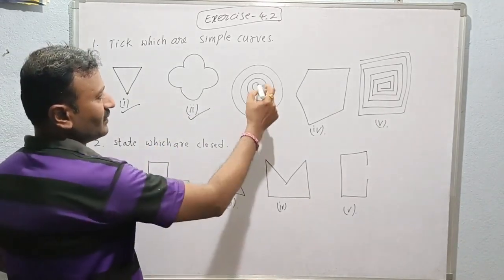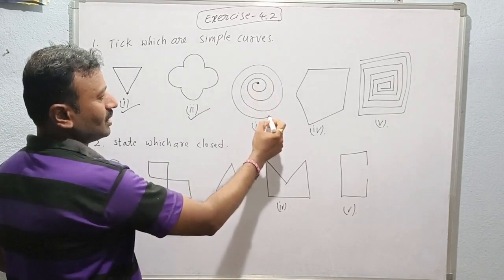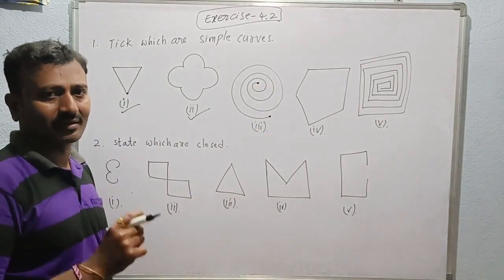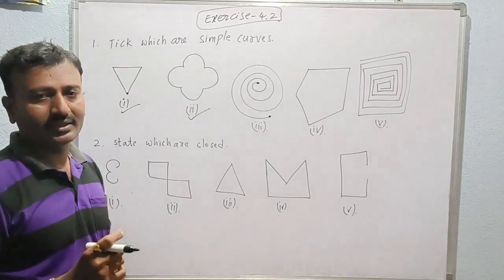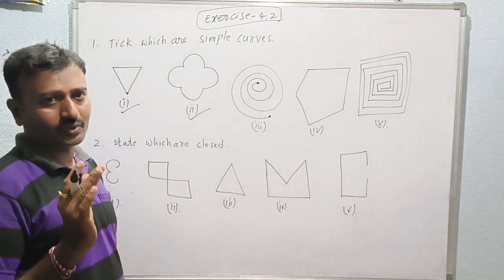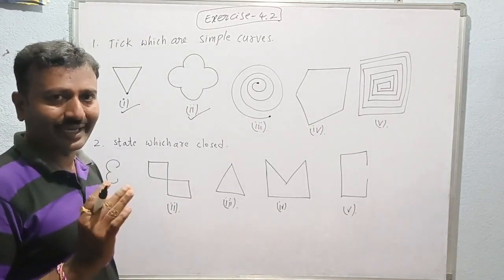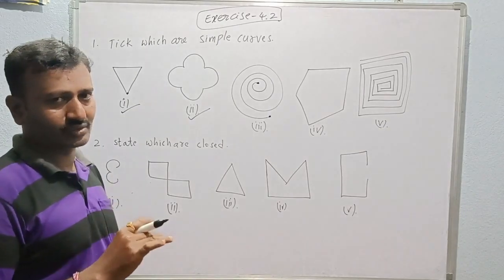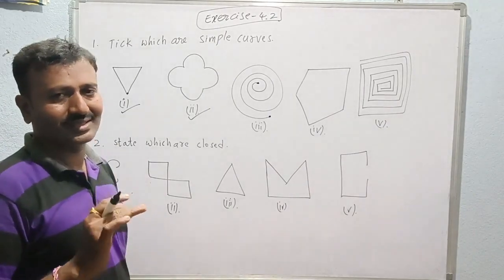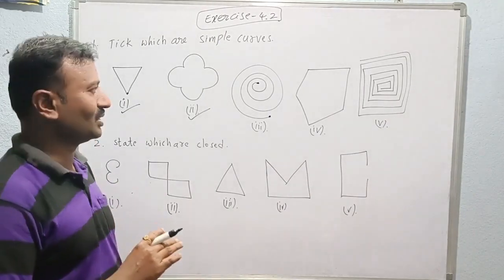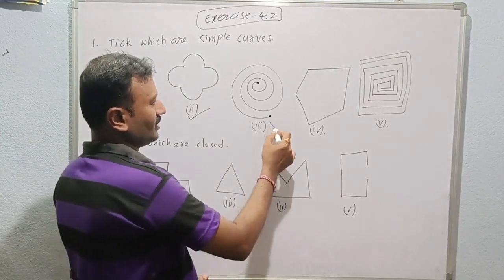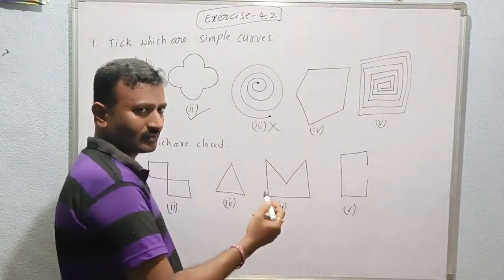Whenever we see this figure, it is not closed — the starting point and ending point are different. They should be the same to be called a closed figure. So we cannot say this is a simple curve, and we can cross it out.